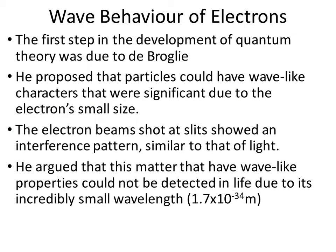What De Broglie pulled from this was that matter actually behaves as both a wave and a particle. The argument was, well why can't we see it in real life? Well, the wavelength is so small — on the order of 10 to the negative 34 — that it was too small for its properties to be detected in real life.